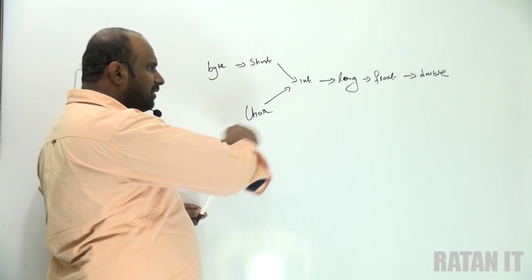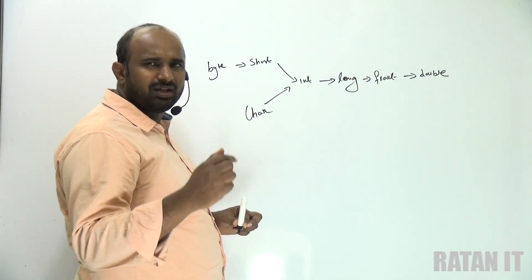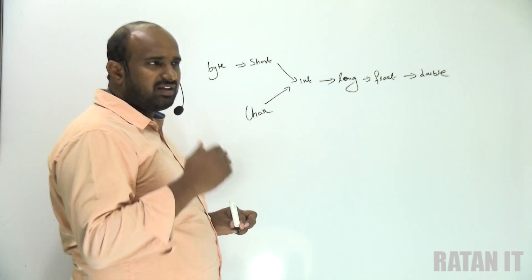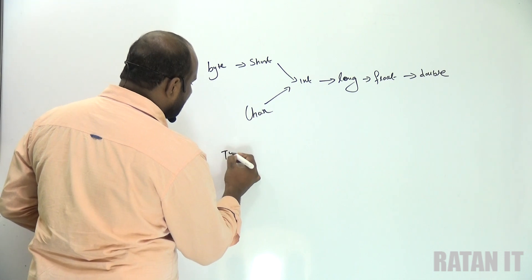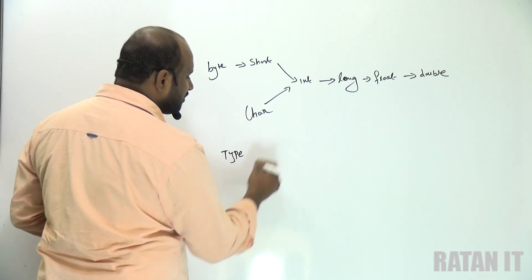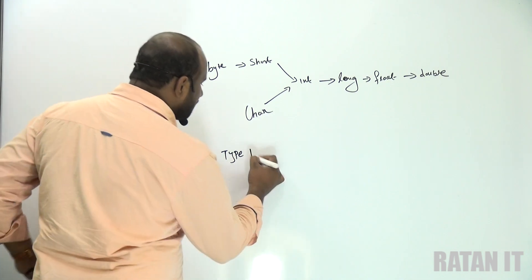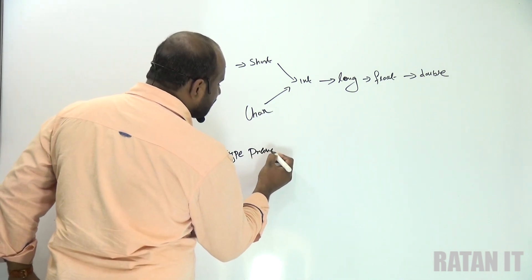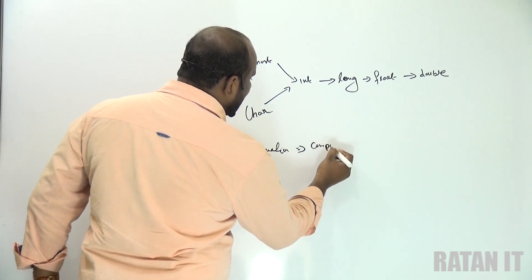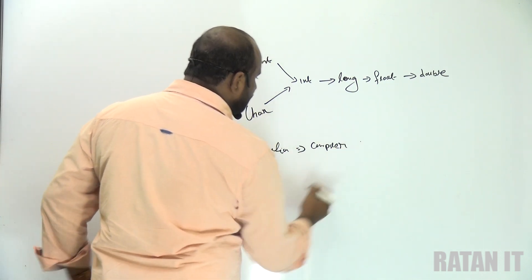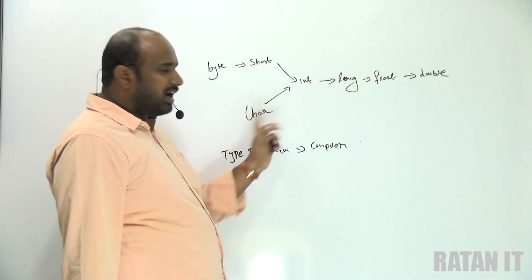Type promotion is always done from left to right. This type promotion is also known as implicit type casting, or you can say up casting. The compiler takes care of this process automatically.